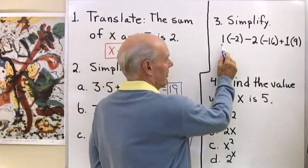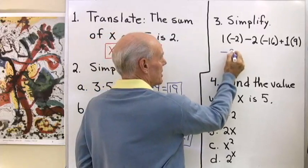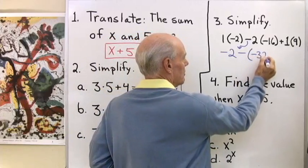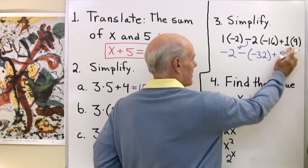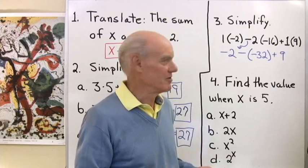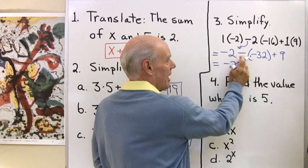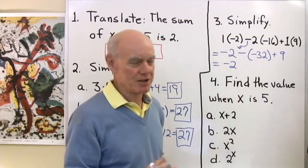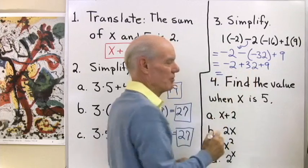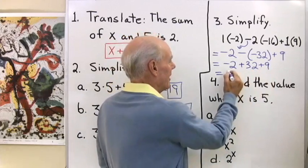Here's another problem. First I'll do multiplication left to right: 1 times negative 2 is negative 2. Then subtract 2 times negative 16, that's negative 32. Plus 1 times 9, which is 9. 1 is the multiplicative identity — multiplying a number by 1 never changes its value. So we have negative 2, and subtracting negative 32 is the same as adding positive 32, plus 9. Negative 2 plus 32 is positive 30, plus 9, that's 39.